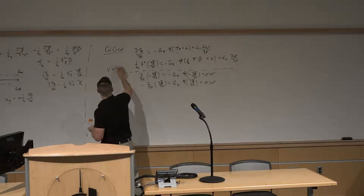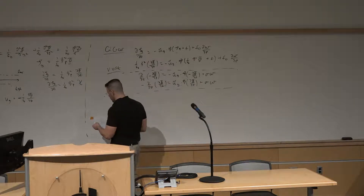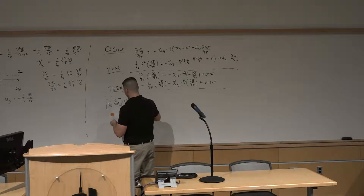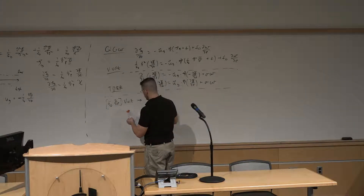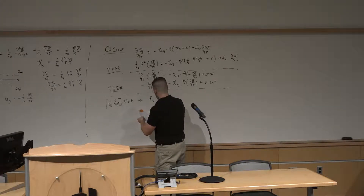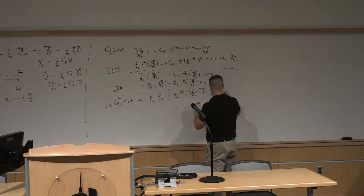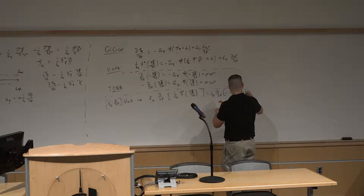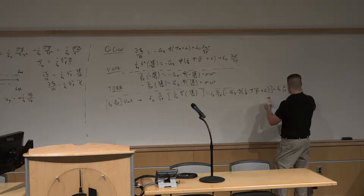This is the vorticity equation and the thermodynamic energy equation. Now we're going to start combining these equations. First, we take f₀(∂/∂p) of the vorticity equation. Taking f₀(∂/∂p) of both sides gives: f₀·∂/∂p[(1/f₀)∇²(∂φ/∂t)] = f₀·∂/∂p[−u_g·∇((1/f₀)∇²φ + f)] + f₀·∂/∂p[f₀(∂ω/∂p)].